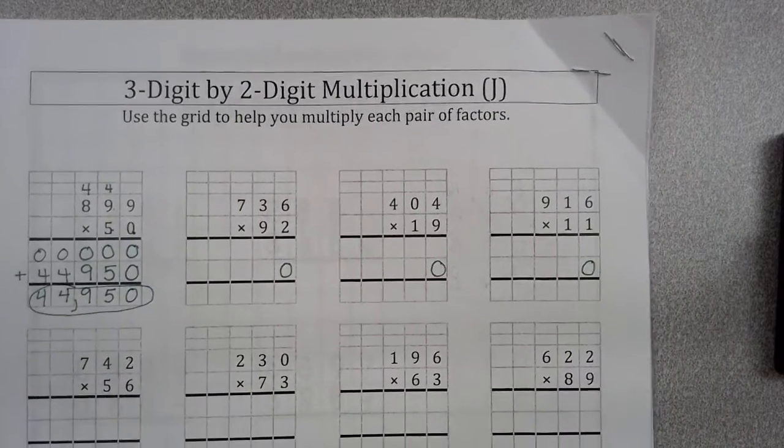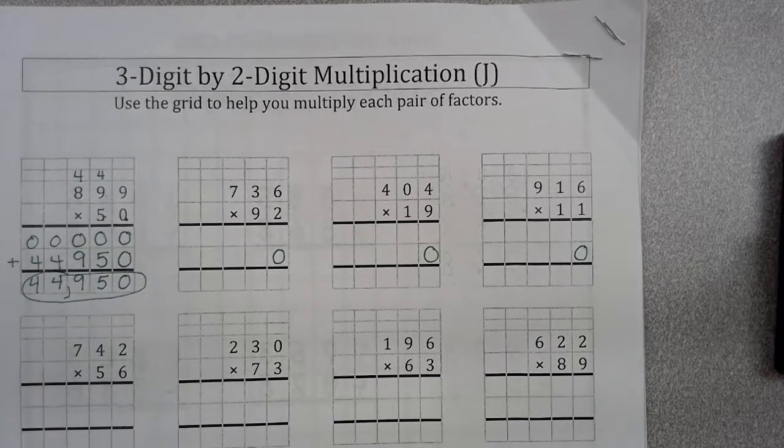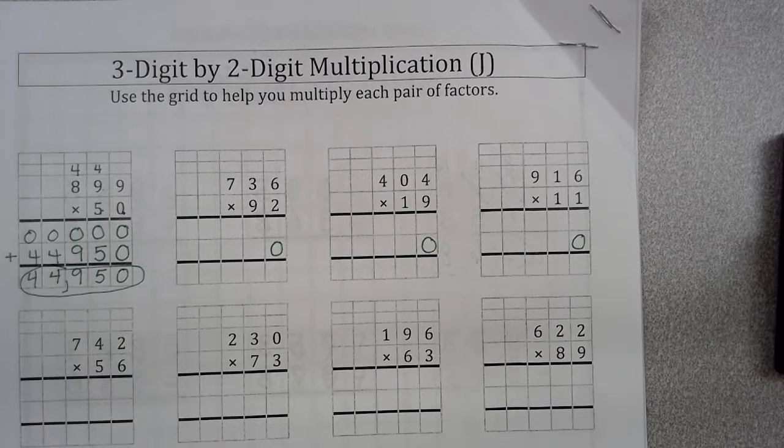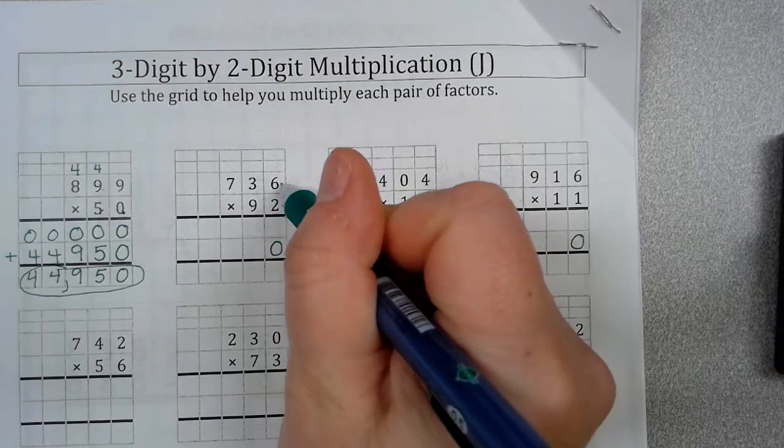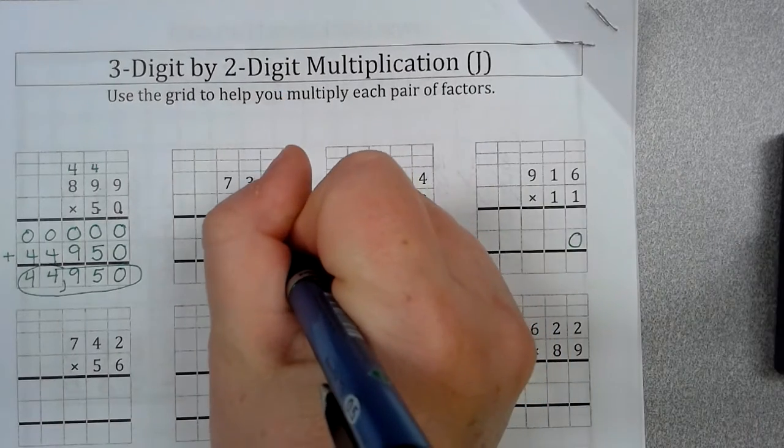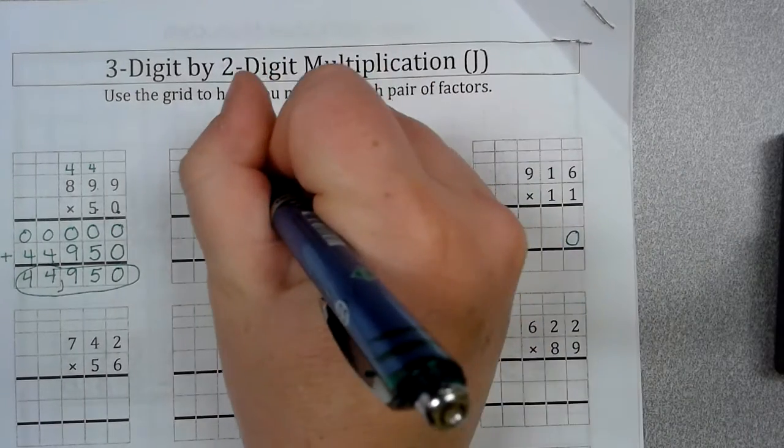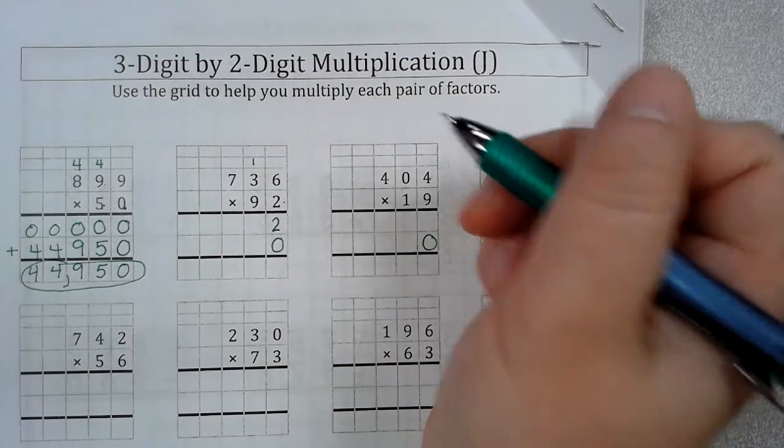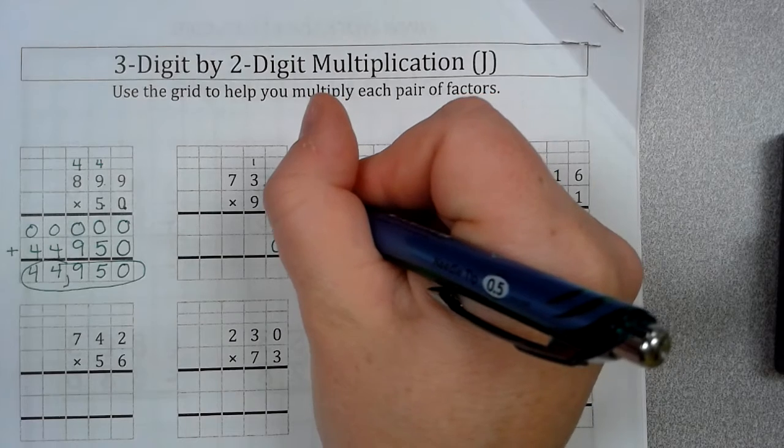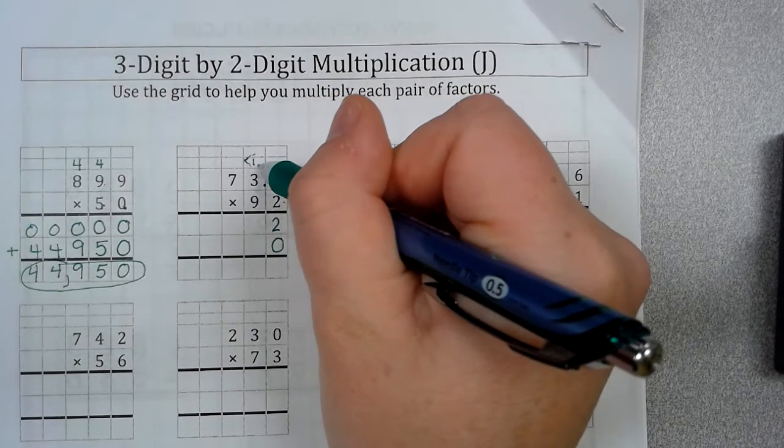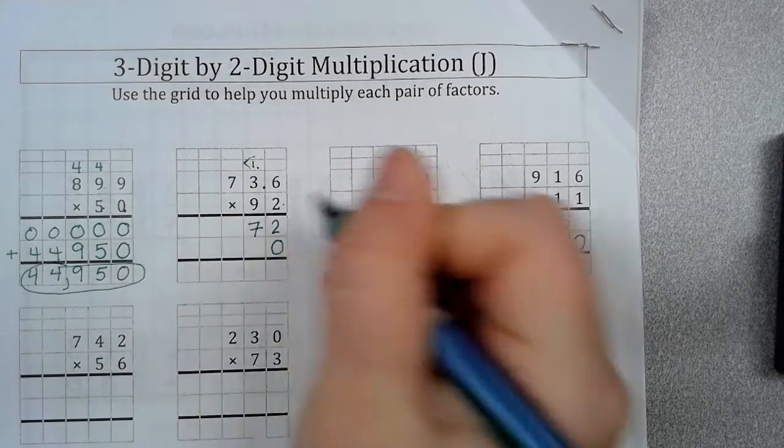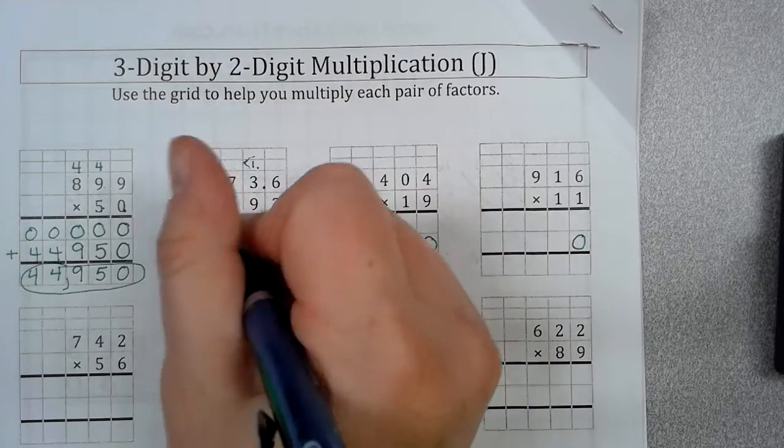I'll continue on. 736 times 92. So, just like before, you start in your 1's place. You start in your 1's place, guys. 2 times 6 is 12. Carry your 1. 2 times 6. No, it's not. 2 times 3 is 6. Times 1 is 7. 2 times 7 is 14.